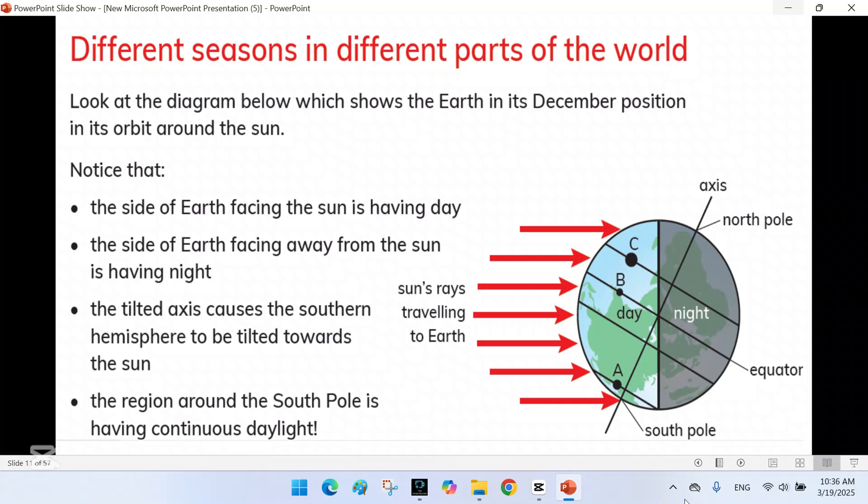The further you move away from the equator, the more noticeable the seasons become. For example, in places like the northern and southern poles, there are months of darkness in winter and months of daylight in summer. On the other hand, areas closer to the equator experience more moderate seasonal changes.